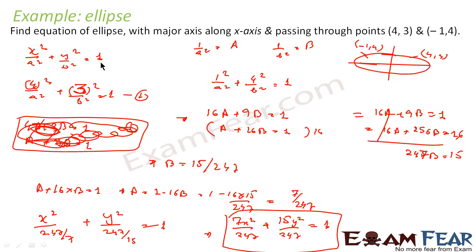What we have done is: we used the standard form x²/a² + y²/b² = 1, and since we know (−1, 4) and (4, 3) satisfy this equation, we substituted these values, solved the system, and obtained the equation of the ellipse.